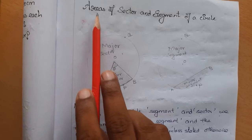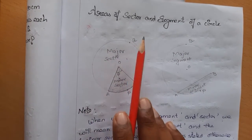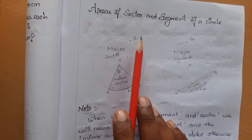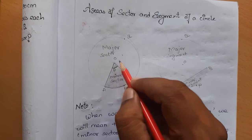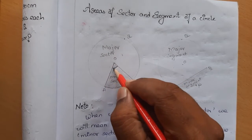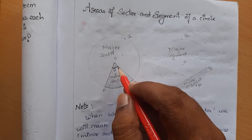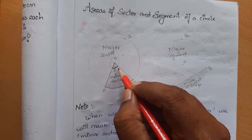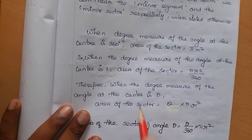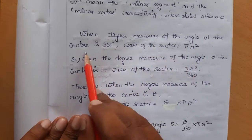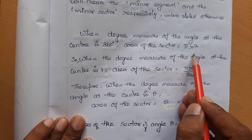We are going to find the areas of sectors and segments. The area of a full circle corresponds to 360 degrees. We want to find only a part of it — let's call the angle theta. For a full revolution of 360 degrees, the area of the sector is πr². So for one degree, the area of the sector is πr² divided by 360.